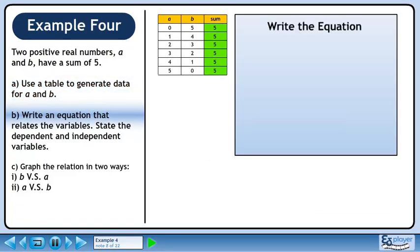In part B, we'll write an equation that relates the variables and will state the dependent and independent variables. The equation is A plus B equals 5.